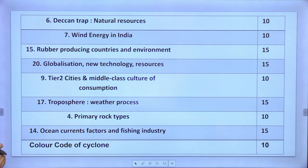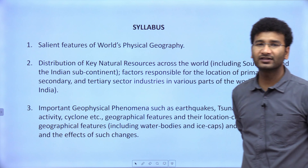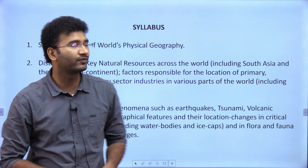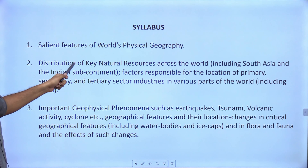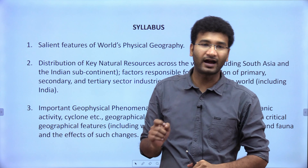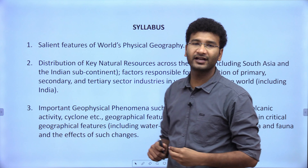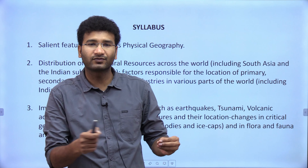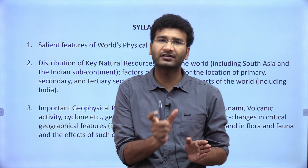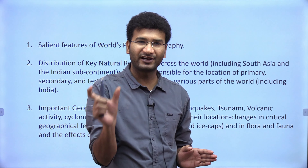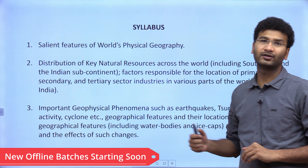If you precisely look at the areas where questions have come from, most questions have not come out of the blue — they have come directly from the syllabus. The UPSC syllabus mentions salient features of world physical geography, distribution of key natural resources across the world including South Asia and the Indian subcontinent, and factors responsible for the location of primary, secondary, and tertiary industries. The questions are very direct this year.